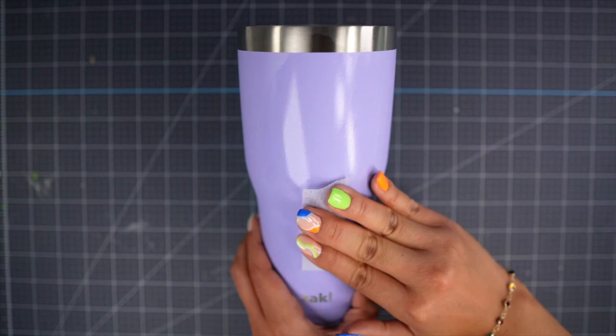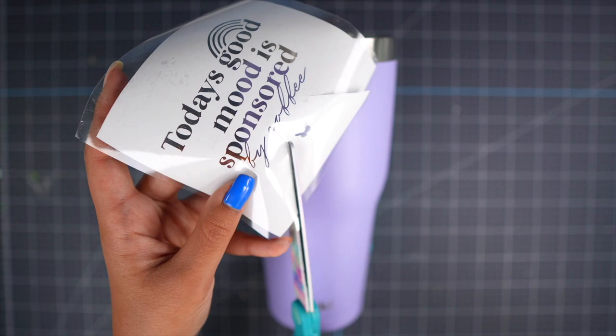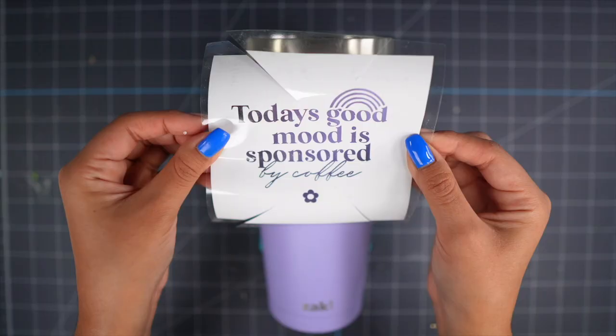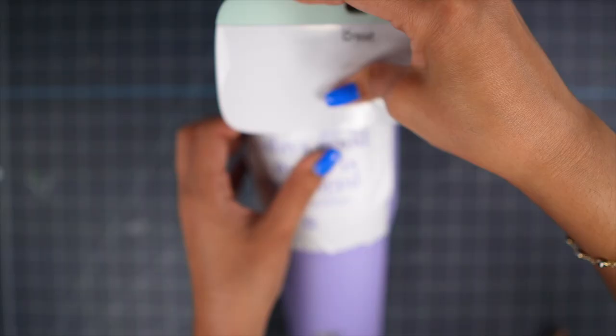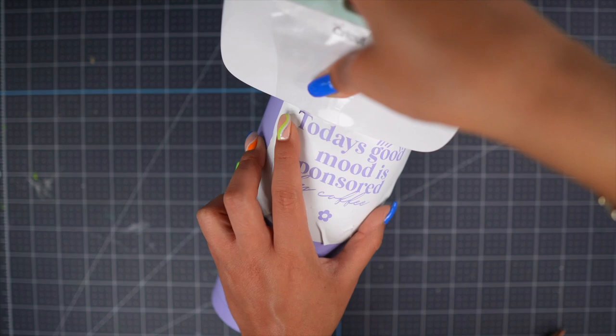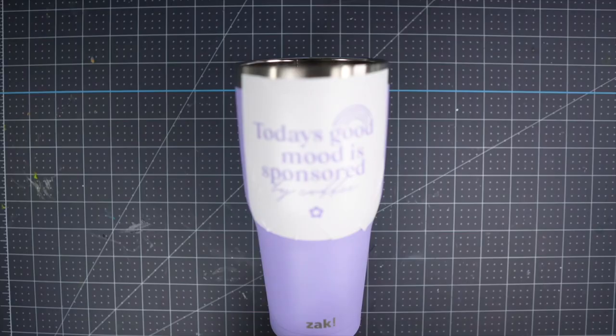Before applying the stencil on the tumbler cut a few slits around the design. By doing this you are giving the decal a little bit more flexibility and help it lay flat. It's important that the stencil is sealed completely so after removing the transfer tape I took my heat gun and went over it for a few seconds. Next put painters tape around the entire stencil to prevent the product from coming in contact with the rest of the tumbler.